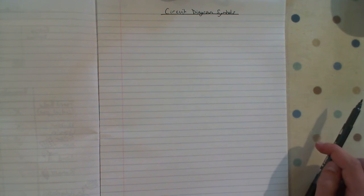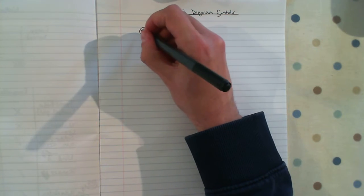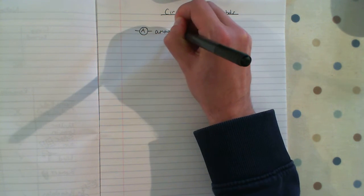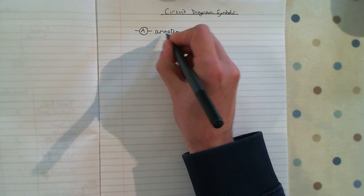This video is about standard circuit diagram symbols. I'm going to go through the ones that people most commonly get mistaken with. An ammeter is a circle with a capital letter A in it. Ammeter means meter of the amps, so it measures the amps.